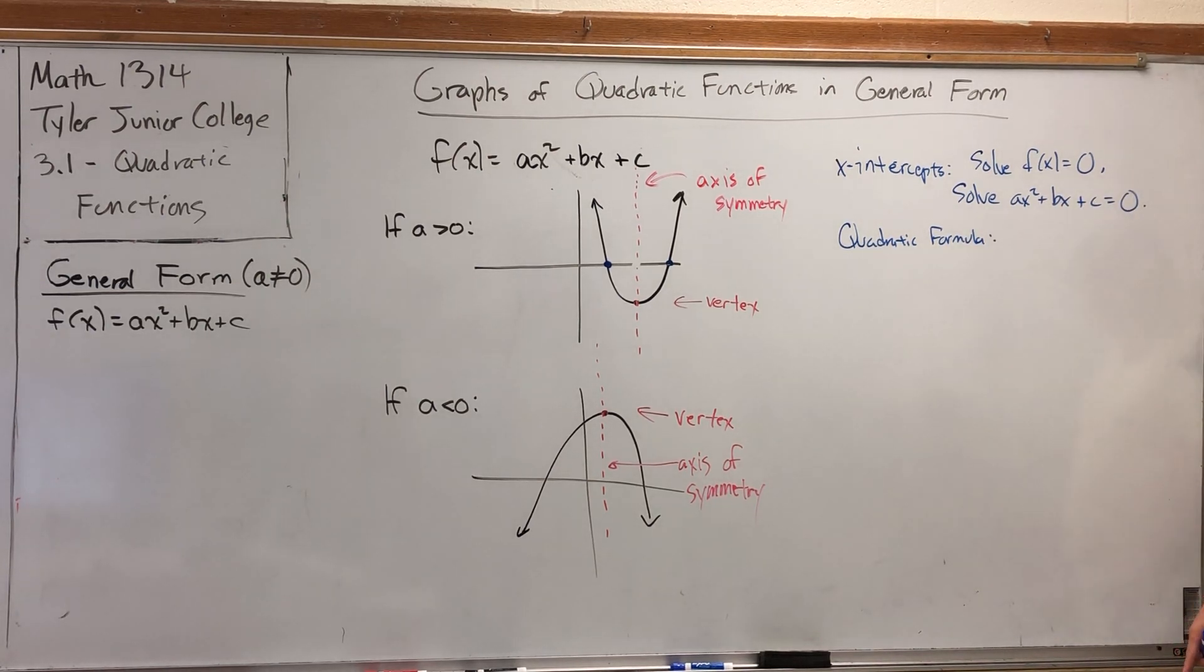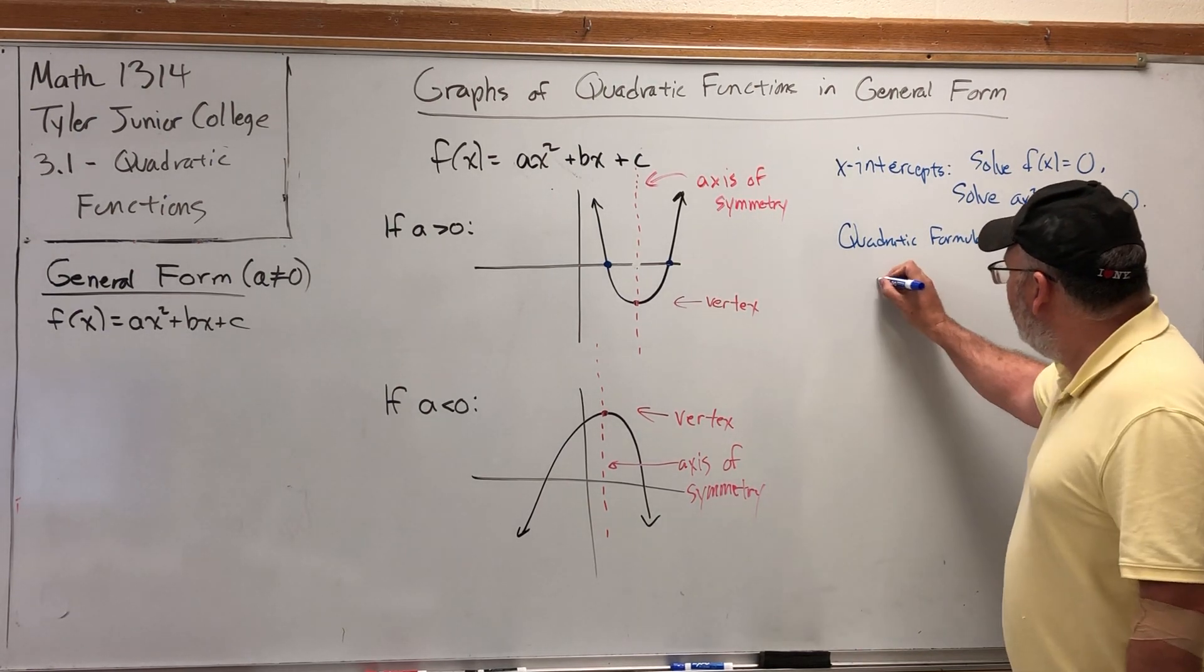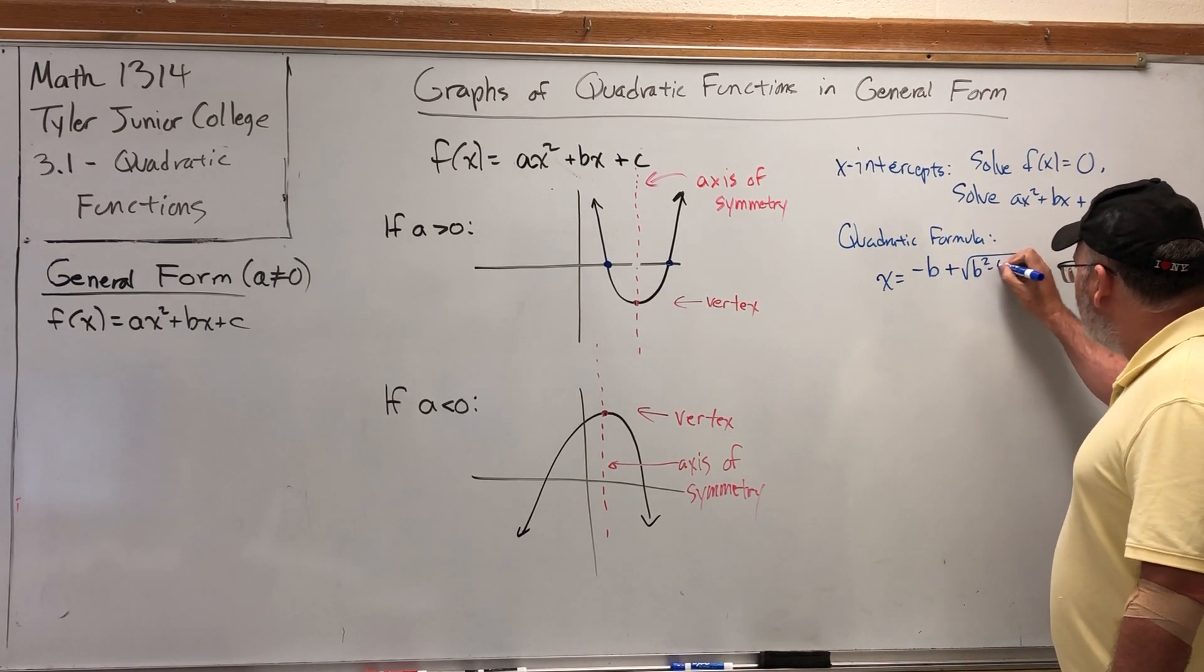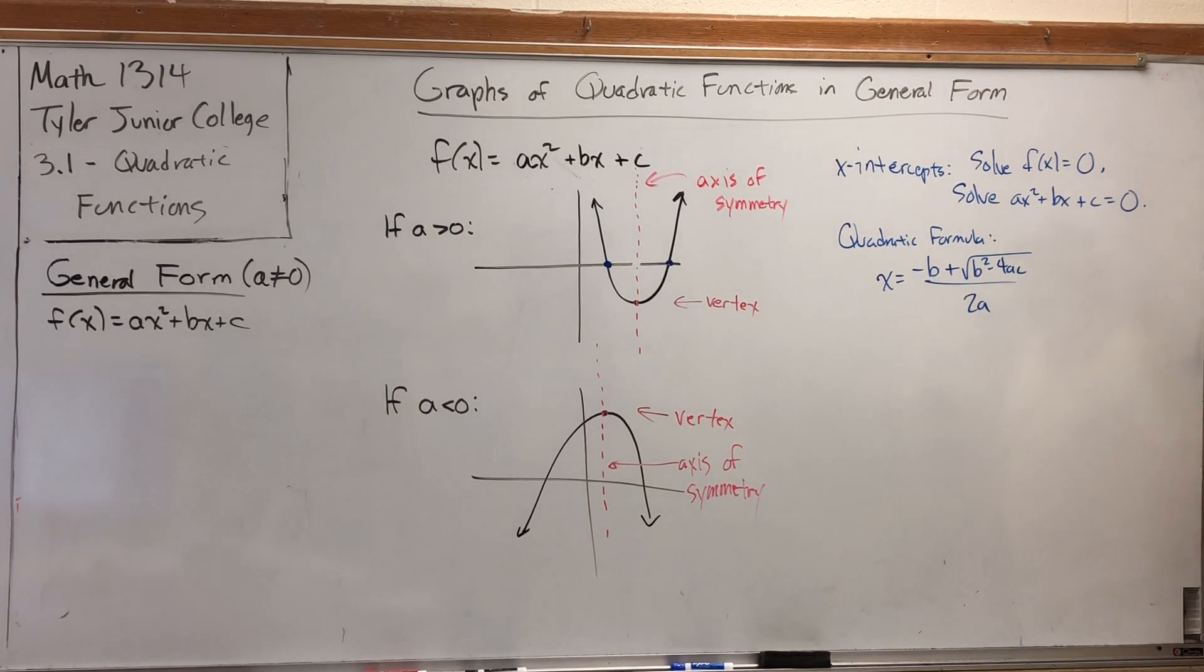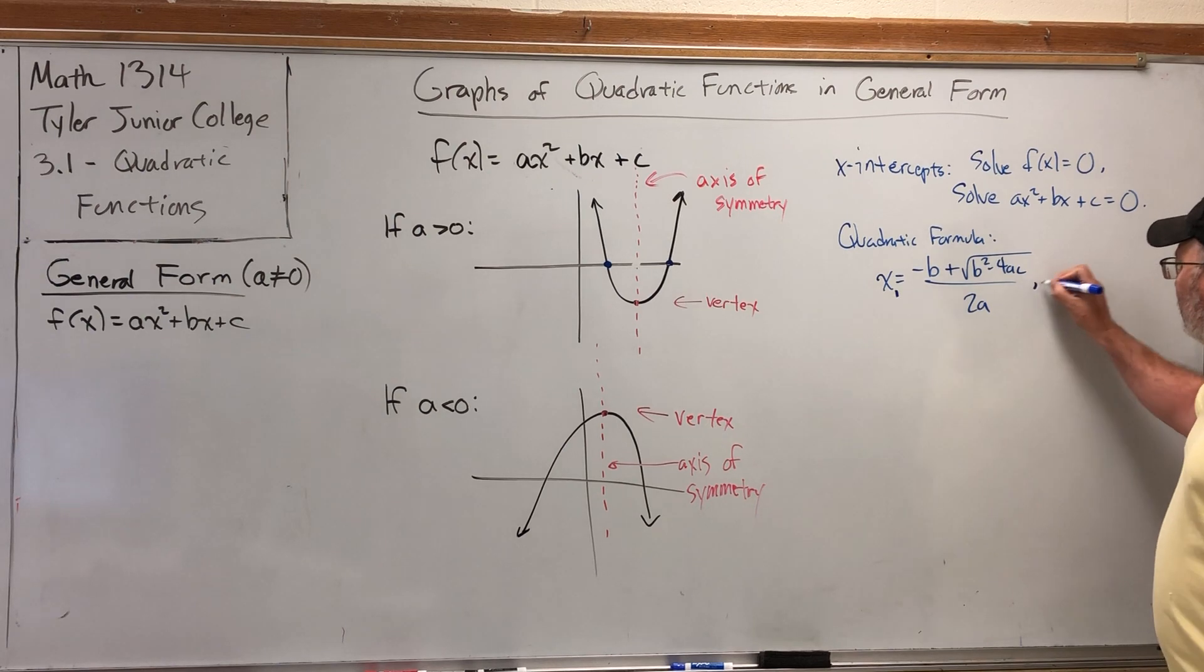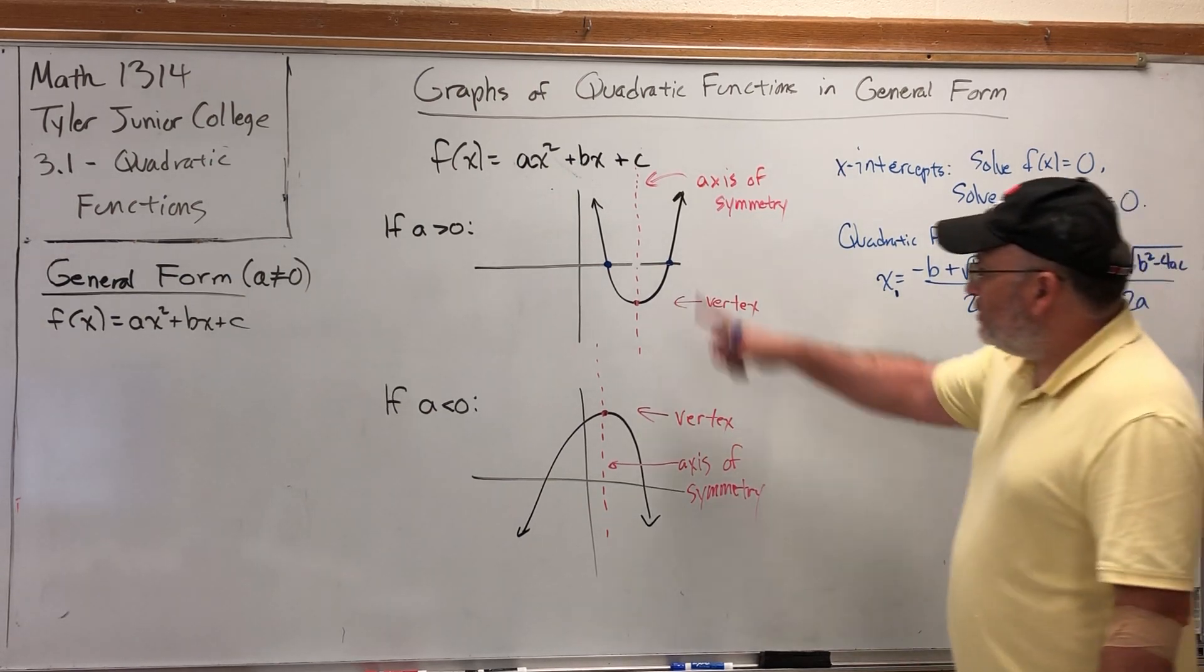If we use the quadratic formula, its solutions would tell us what makes this equal to zero, which would tell us the x-intercepts. The solutions are x = (-b ± √(b² - 4ac))/2a. Let's call the first x-intercept x₁ = (-b + √(b² - 4ac))/2a, and the second x-intercept x₂ = (-b - √(b² - 4ac))/2a.